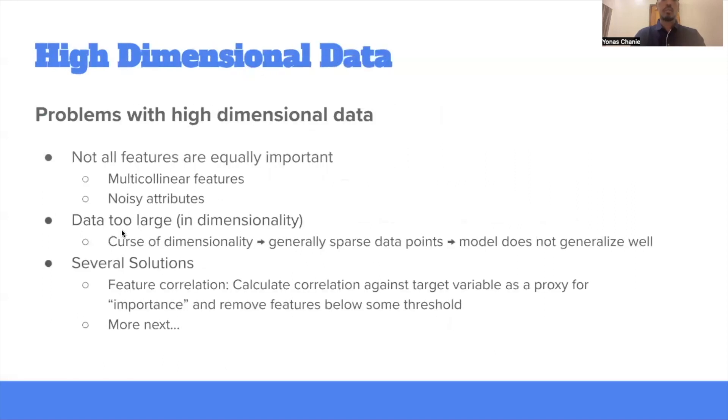The next one is preprocessing high dimensional data. Even though high dimensional data is desirable, it also comes with its own problems. And the two main problems in high dimensional data are not all features are equally important. And also the data might be too large in terms of dimensionality. This is an issue for training performance, as well as training time and space. Going back to the first one, our data might not be equally important. That means we might have collinear features, features that are collinear to each other. This creates a problem while training the data. And also some of the features might be noisy.